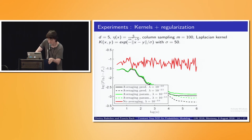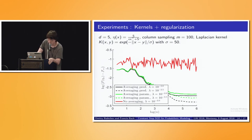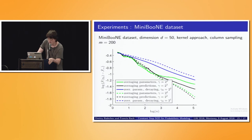Now to the kernel case. As mentioned, in the kernel case our approach is always better than averaging parameters. Again, red is without averaging and black is our approach, which outperforms averaging parameters in green. For the kernel case we also need to use some regularization, otherwise it will not converge. Finally, on a real dataset — logistic regression on a 50-dimensional dataset with 100,000 data points — averaging predictions in black again outperforms averaging parameters.